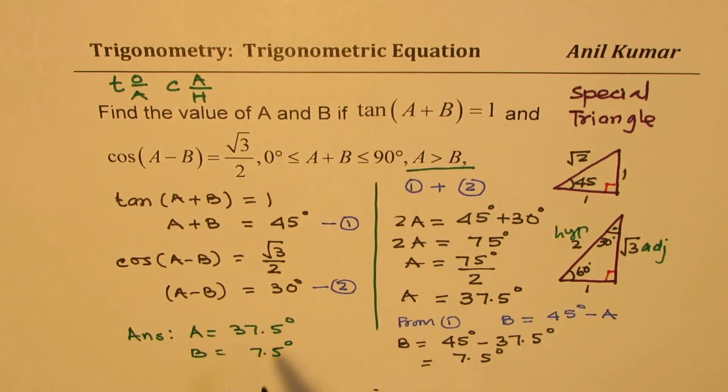You can check, when you add them, you get 45 and tan of 45 is 1. So that is how you could do it. And when you subtract, you get 30 degrees and cos of 30 degrees is √3/2. And you can clearly see that A is greater than B.